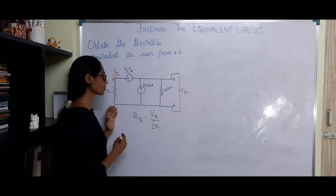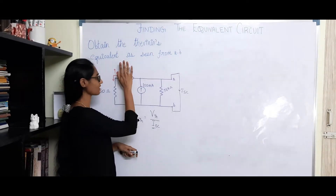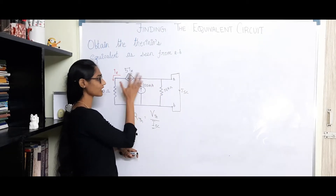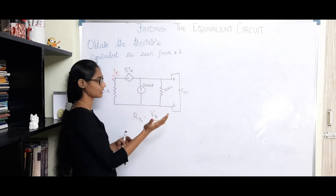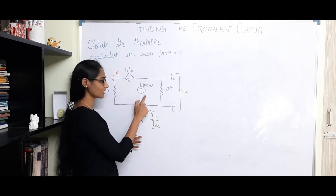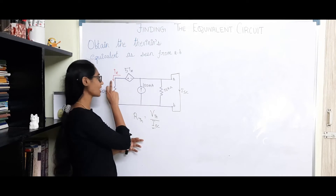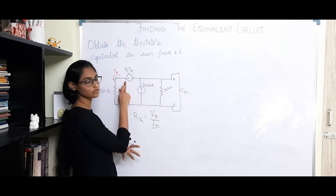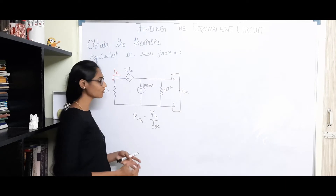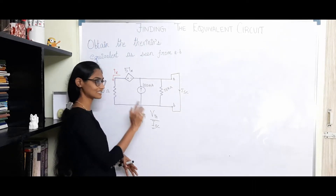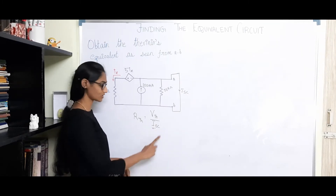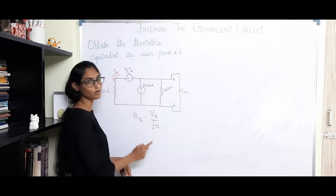When we have a dependent source, we cannot just kill the sources. For example, open-circuiting the current source means it will have no impact on the circuit. The dependent source will also have no impact, because a dependent source requires the support of the independent source to get power. When Ix becomes 0, the dependent source automatically goes to 0, and we discard that loop — we are changing the topology of the network. So we should not eliminate the power sources as such and then find Thevenin's equivalent resistance.